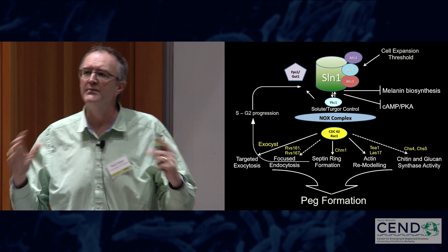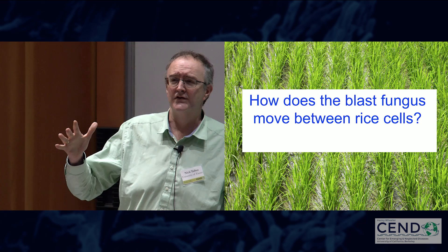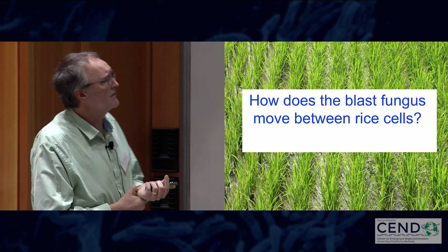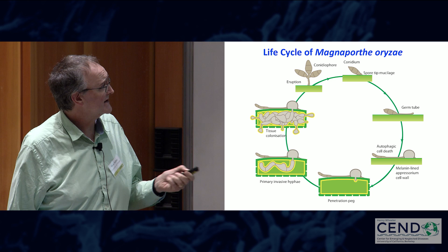So what happens next? We've been on the rice leaf surface — what's the next stage? How does the fungus move between rice cells, and what happens once it's actually in the rice leaf? You've seen some of the morphogenetic changes that occur once the fungus is in the rice leaf from Barbara's talk, as it enters primary invasive hyphae and colonizes tissue rapidly.